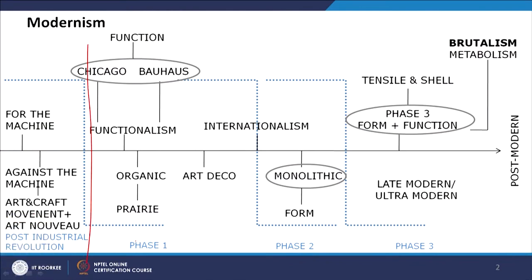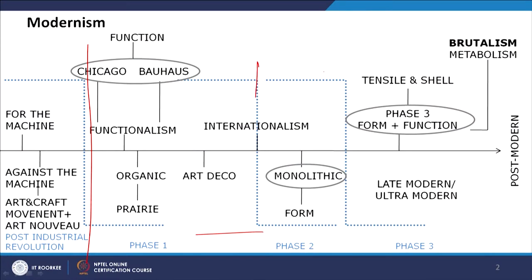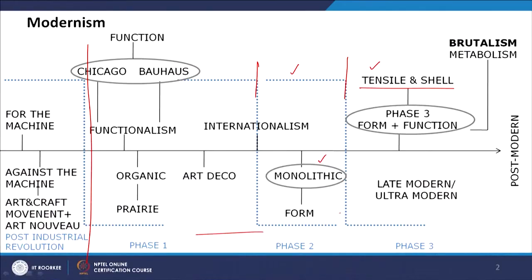Looking at the timeline from pre-modern onwards: we passed Phase 1 with different architectural styles, starting from two absolute opposite folds — for the machine and against the machine — which started with machine aesthetics and craftsmanship/biomorphic design respectively. In Phase 2 there was one particular internationalist movement and its continuum in monolithic form. Then we saw more aesthetic preference given, with tensile and shell structures. Phase 3 is also called late modern or ultra-modern, where tensile and shell, brutalism, and metabolism all appeared.